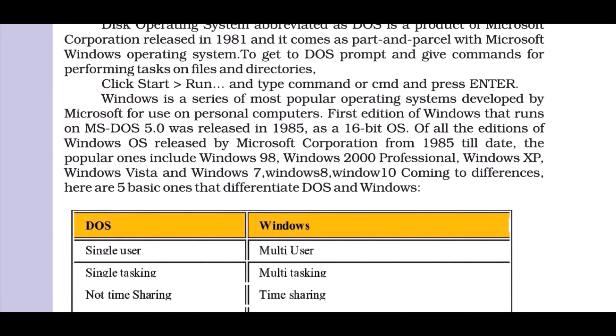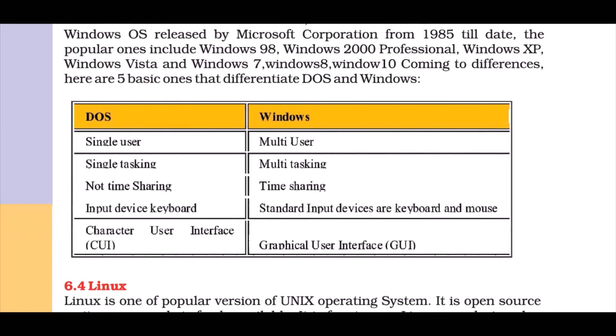Main differences between DOS and Windows: DOS is a single-user system using a command line where only one user can input one command at a time, whereas Windows supports different user accounts and multiple users can work on different files. DOS can run only one task at a time, while Windows can run multiple tasks simultaneously — you can listen to music, work on a file, and more.